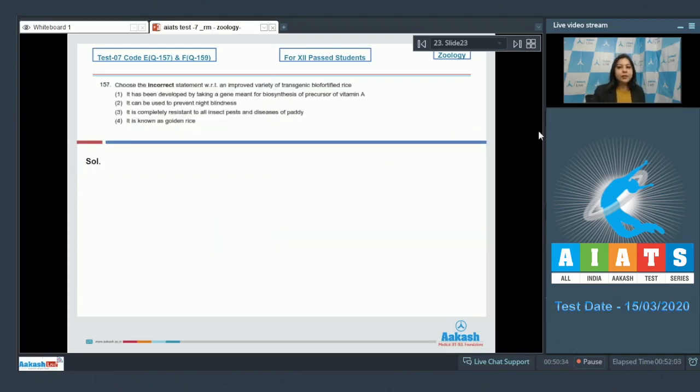Moving on to the next question, question number 157: Choose the incorrect statement with respect to an improved variety of transgenic biofortified rice. Number one, it has been developed by taking a gene meant for biosynthesis of precursor of vitamin A. This is a correct statement as golden rice